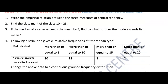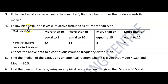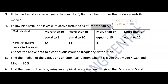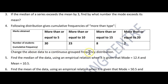Question 4: The following distribution gives cumulative frequencies of more-than-type. They have given frequencies of more-than-type, and the question asks you to change the above data to a continuous grouped frequency distribution. Most students, as soon as they see 'more than type,' start constructing a graph — but please be careful. Read the question carefully. They are not asking you to draw the more-than-type ogive; they are asking you to convert the cumulative frequencies into a continuous grouped frequency distribution.